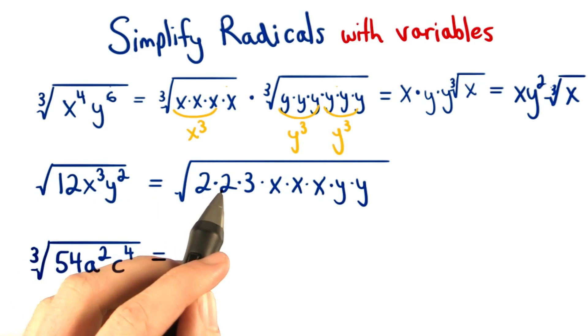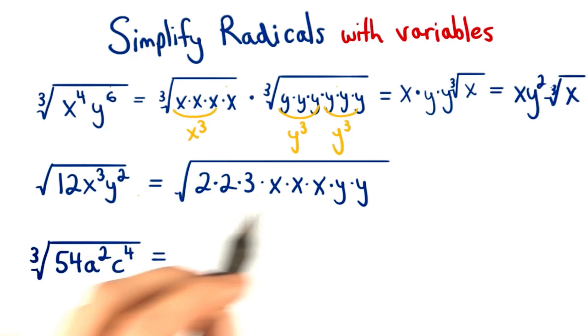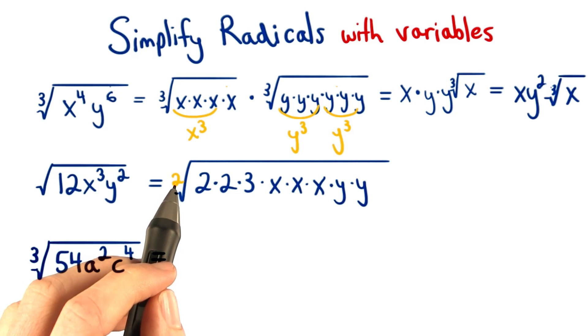We know 2 times 2 times 3 equals 12, and then we have 3 x's multiplied together and 2 y's multiplied together. We're taking a square root, and the index is a 2 here. So we want to find factors that repeat twice.